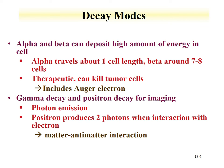Gamma decay and positron decay are generally used for imaging, as both result in photon emissions. The photons are detected external to the body and can be used to image activities in the body — either the location of a cancer or the physiological behavior of a system. For positron decay, the two photons are produced through a matter-antimatter interaction, which is useful in developing high-resolution images.